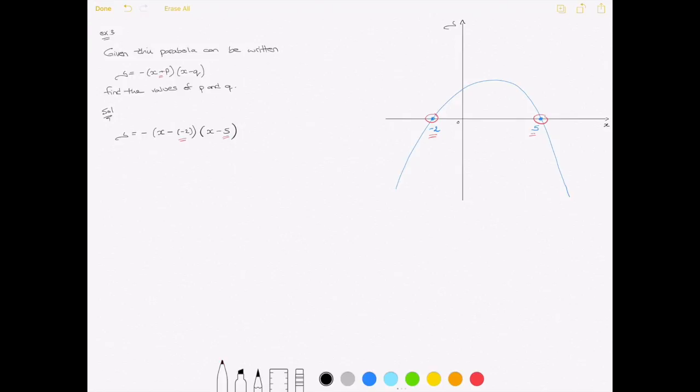Now, if I simplify this a bit, remembering that when I subtract a negative, it turns into a positive, this turns into y equals negative x plus 2 times x minus 5.